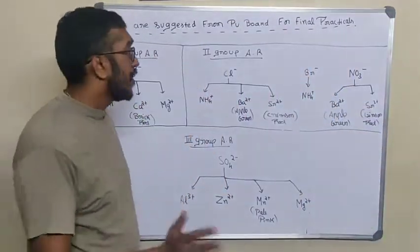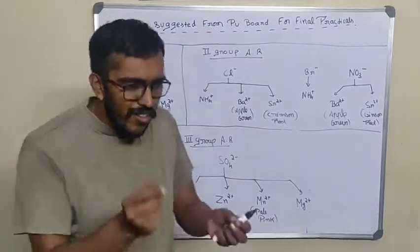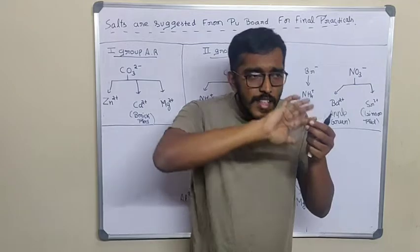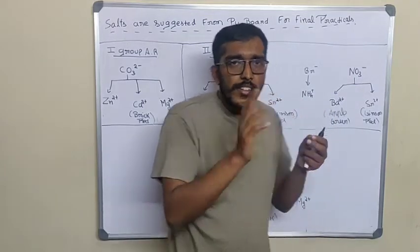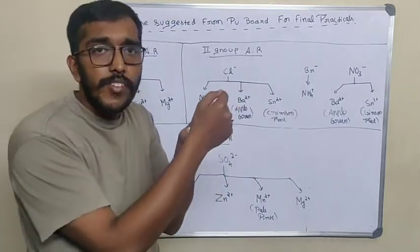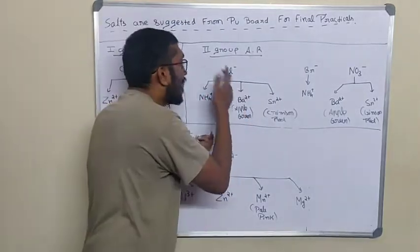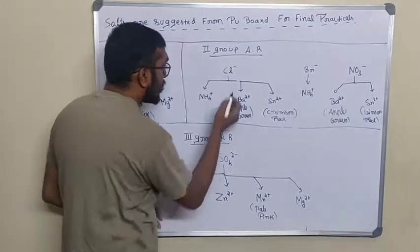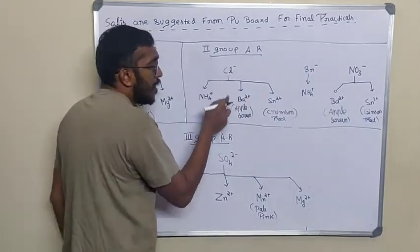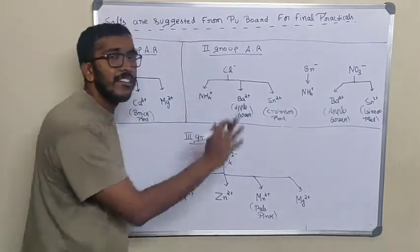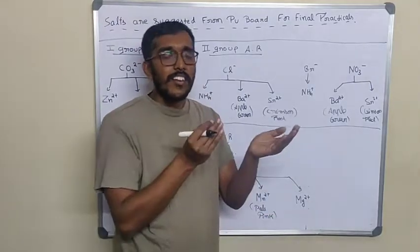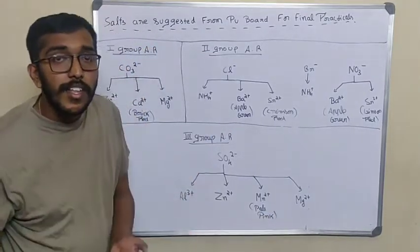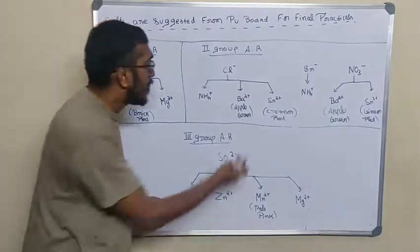If crystalline, then it may be second group acid radicals or third group acid radicals. Take a dry test tube. Salt plus concentrated sulfuric acid. If any reaction is going on, dip NH4OH there in the test tube. If white dense fumes form, it's chloride. So we have these options: ammonium chloride, barium chloride, and strontium chloride. Take a little salt, add concentrated HCl, do flame test. If apple green color comes, it's 100% barium chloride. If red crimson red comes, it's strontium chloride.